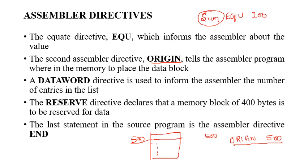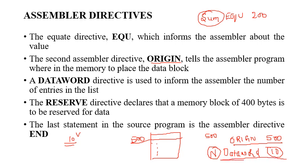The next assembler directive is the DATAWORD directive, which is used to inform the assembler of the number of entries in a list. For example, if you want to find the largest number among 10 numbers, the count 10 has to be loaded in the program. This can be done by naming the count as N and writing 'N DATAWORD 10', which indicates that in the list there are 10 numbers.